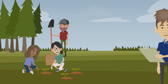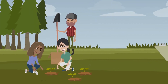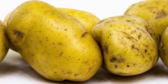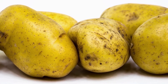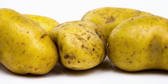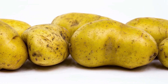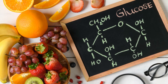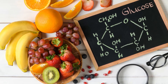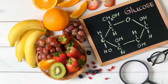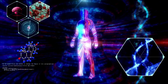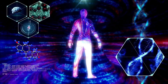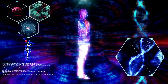Plants store glucose as starch. The potato cells contain granules where starch resides during winter until energy is needed for growth in the spring. Animals store glucose as glycogen. In our bodies and those of other vertebrates, liver cells contain granules where glycogen is stored until needed.